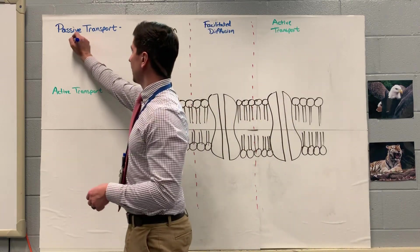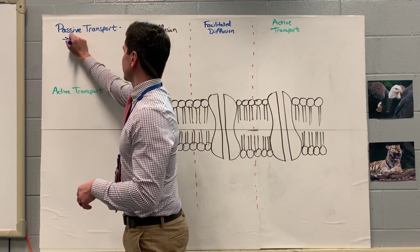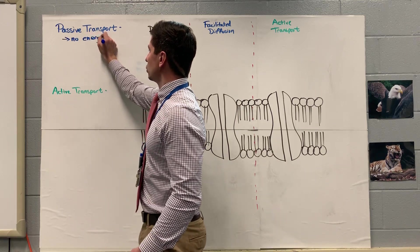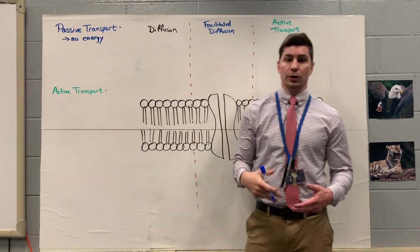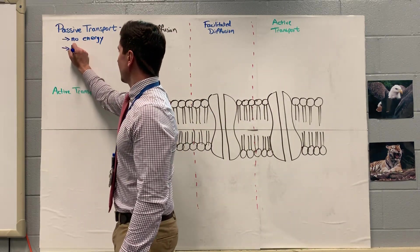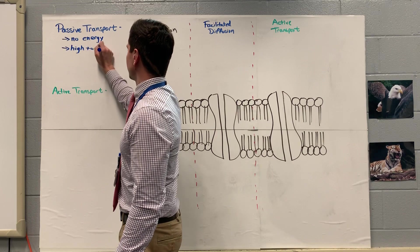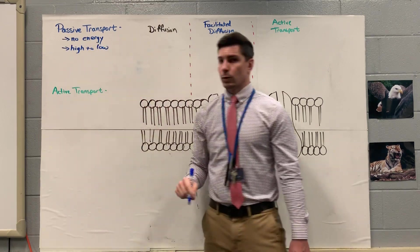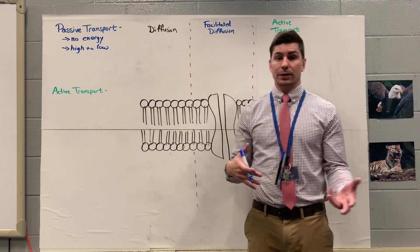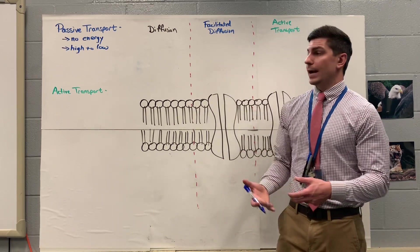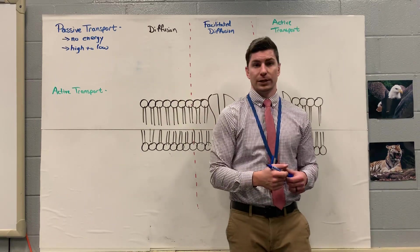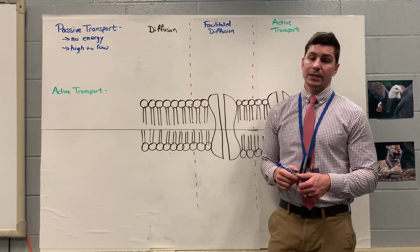So to start off, passive transport, just some characteristics. For this, we do not need any energy. So for passive transport, no ATP is going to be needed. Secondly, we're always going to go from high to low concentration. We're always going to move our particles, whatever they might be, from high concentration to low concentration. And this is going to continue on until we reach equilibrium.